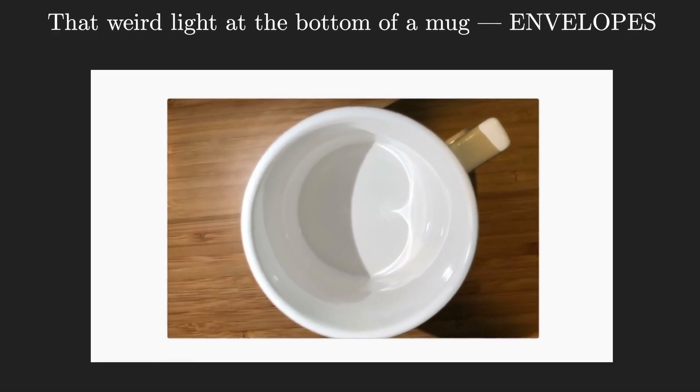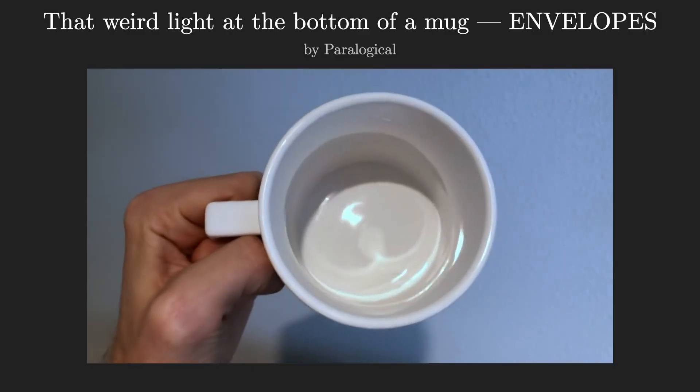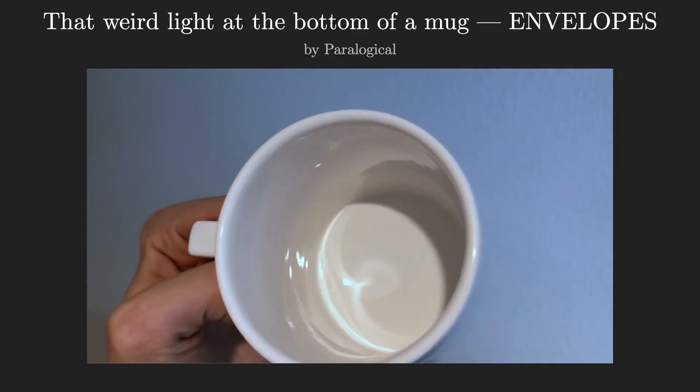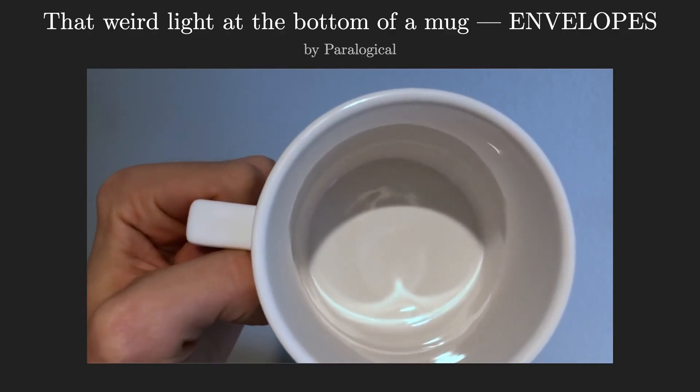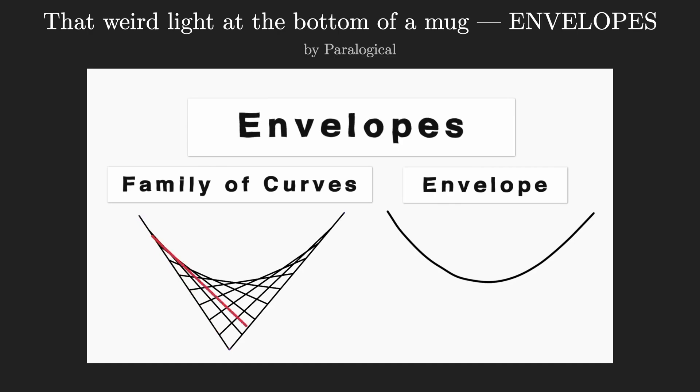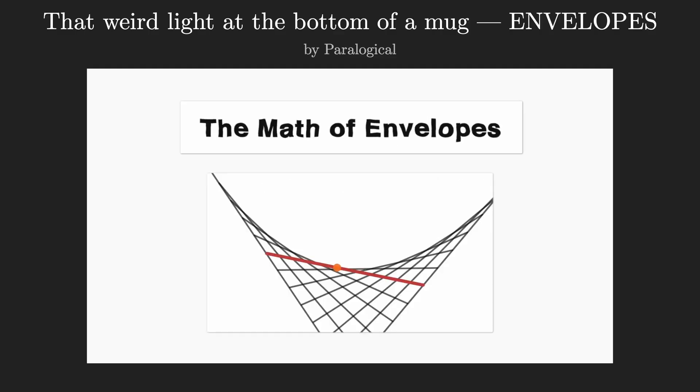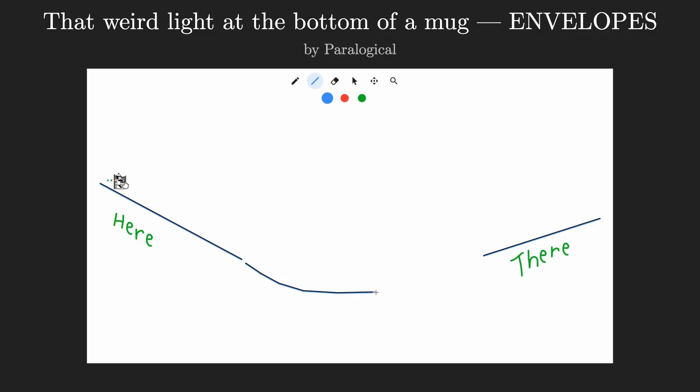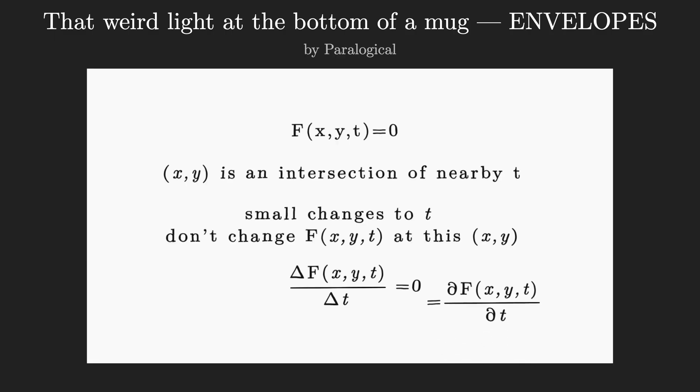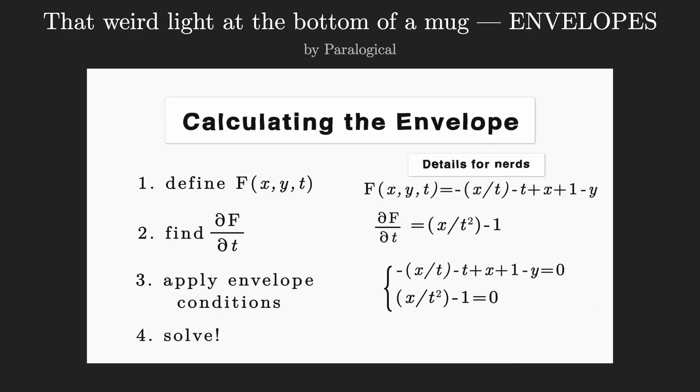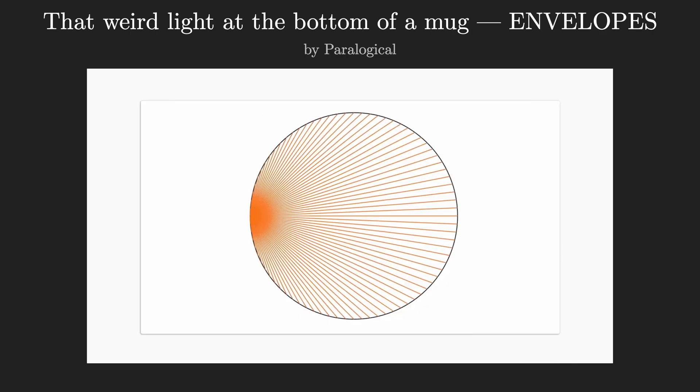This entry, from a channel called Paralogical, opens by asking why the light reflected at the bottom of a mug seems to form this characteristic cardioid shape. The core mathematical idea is envelopes, a way to describe one curve using a family of other curves. What really makes the video special is not just how clearly he explains that subject, but how tangible and well chosen the examples are, all delivered with a tone that's just plain friendly and enjoyable.